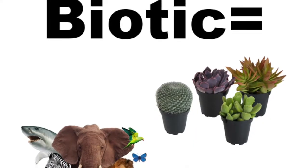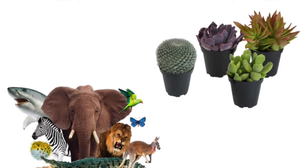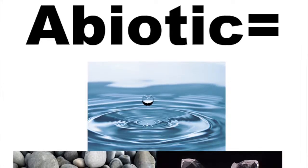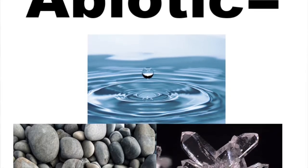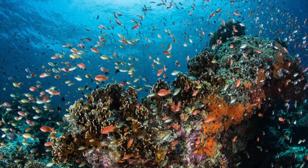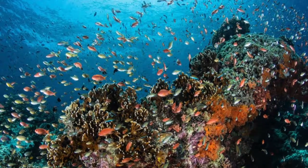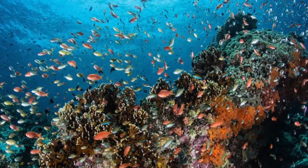An ecosystem contains biotic things, which are living things such as animals and plants, and abiotic things, or non-living things such as water, rocks, and minerals. Many ecosystems contain many different biotic and abiotic factors.